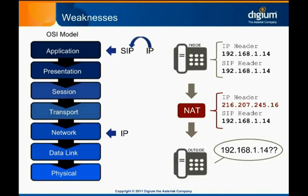However, there are several ways to address this problem. Intelligent network devices such as session border controllers, or SIP-aware firewalls and routers, can often translate addresses in SIP headers appropriately. External STUN servers provide a similar service. Additionally, the SIP implementation in Asterisk has options that can help work around this problem, as we'll see in a later example.